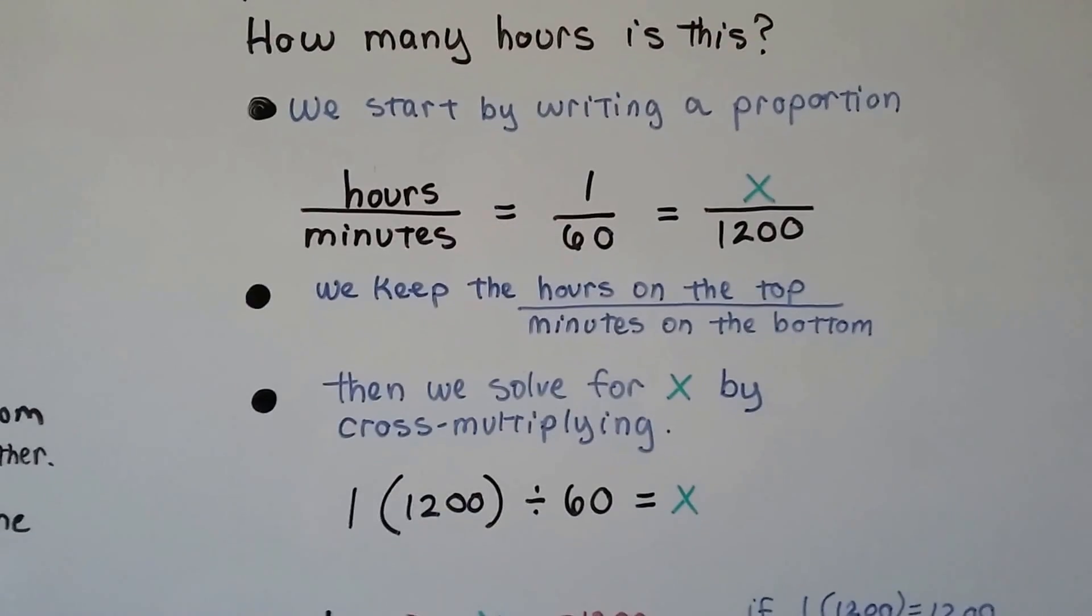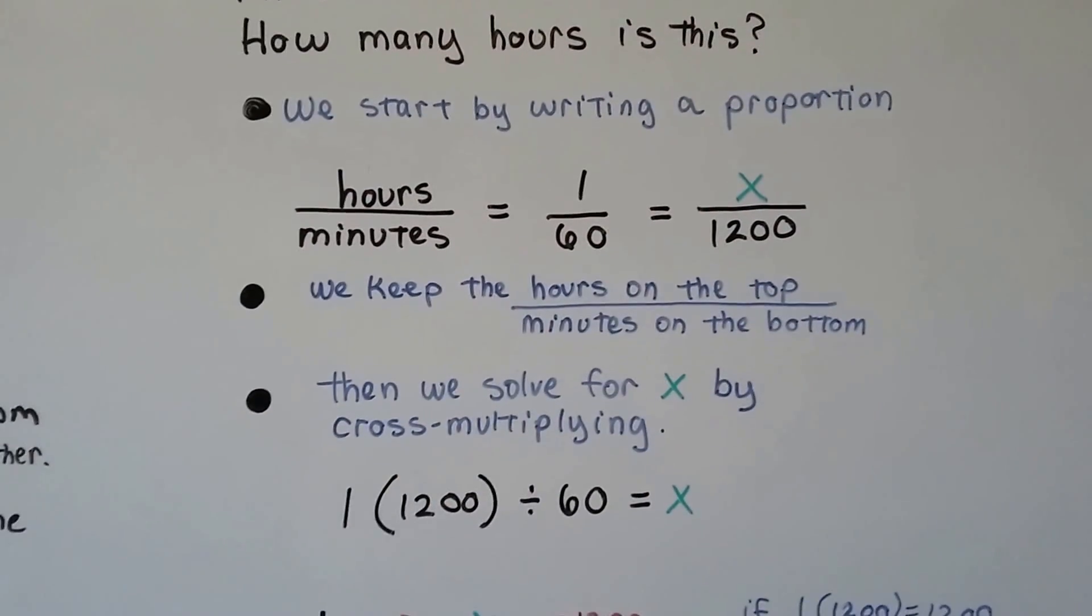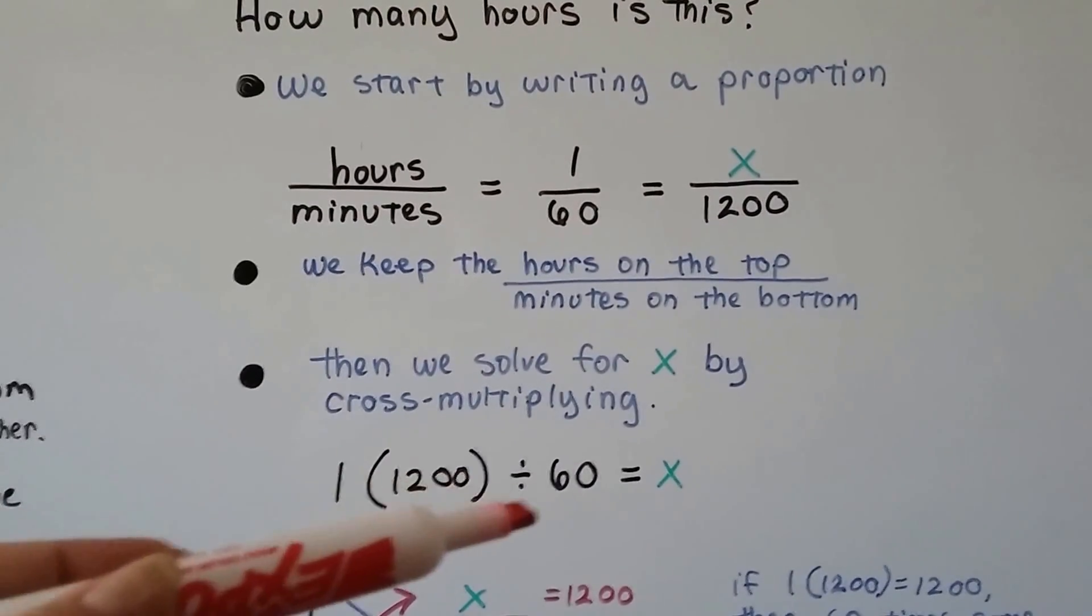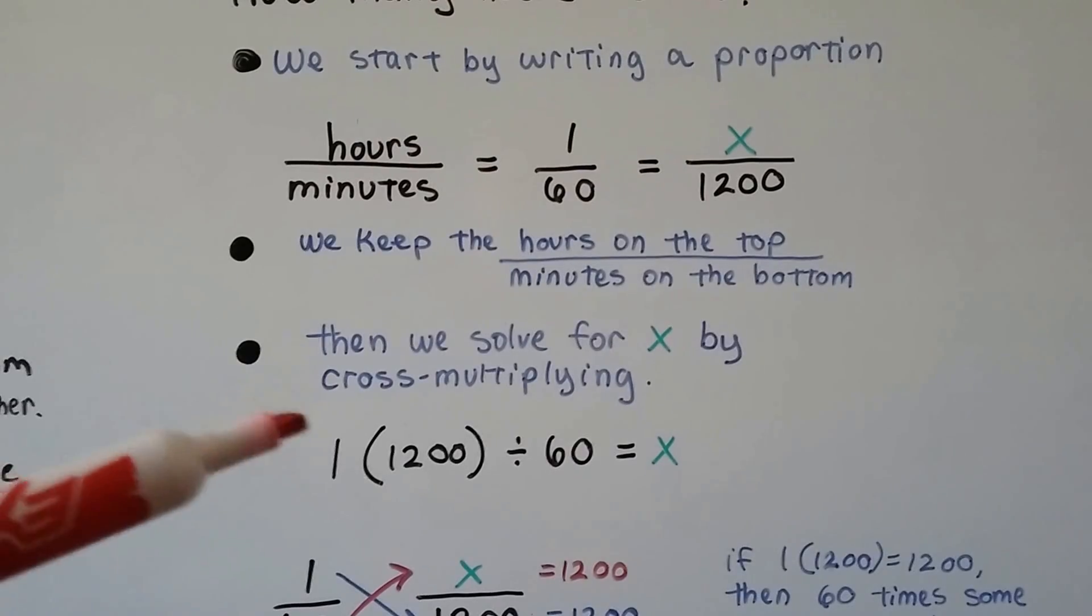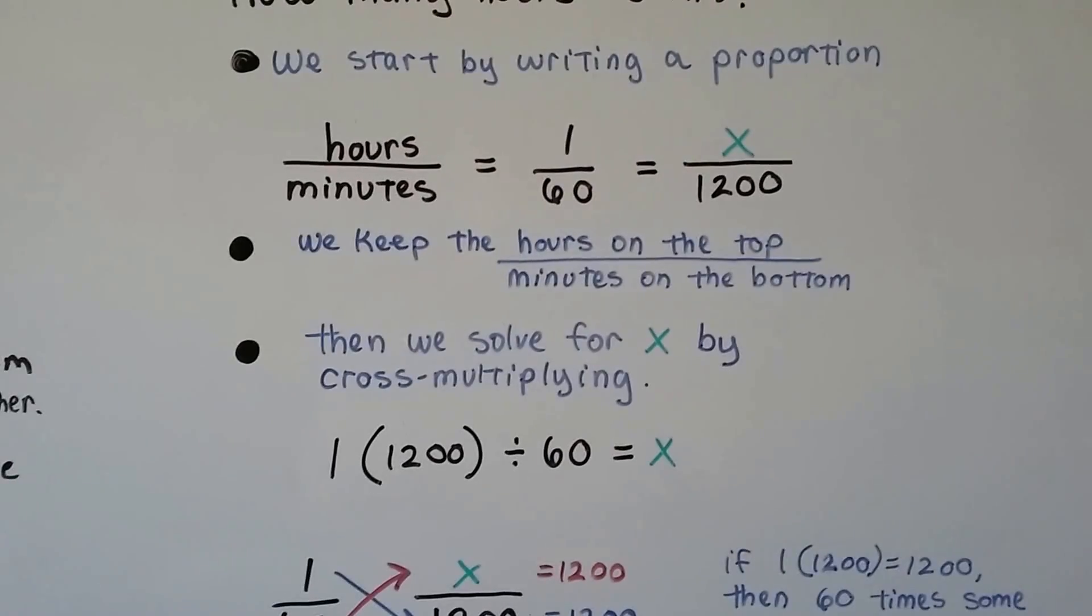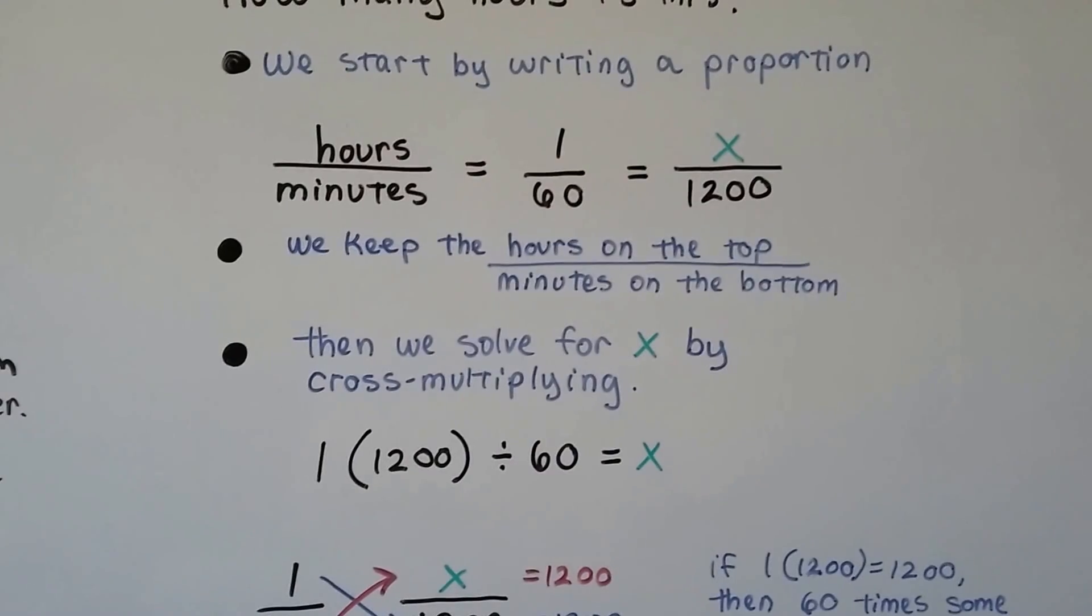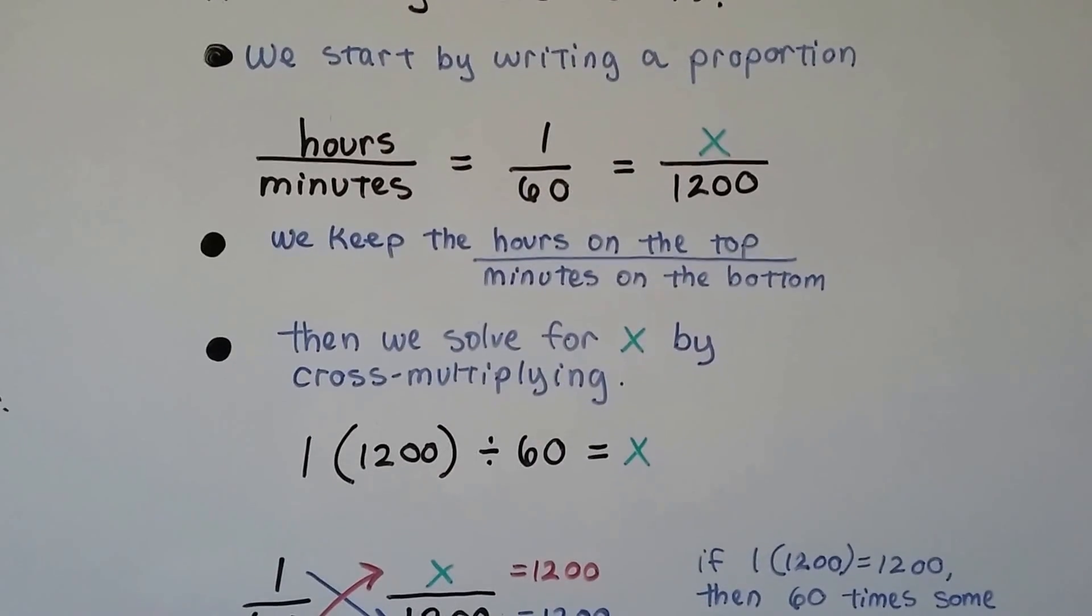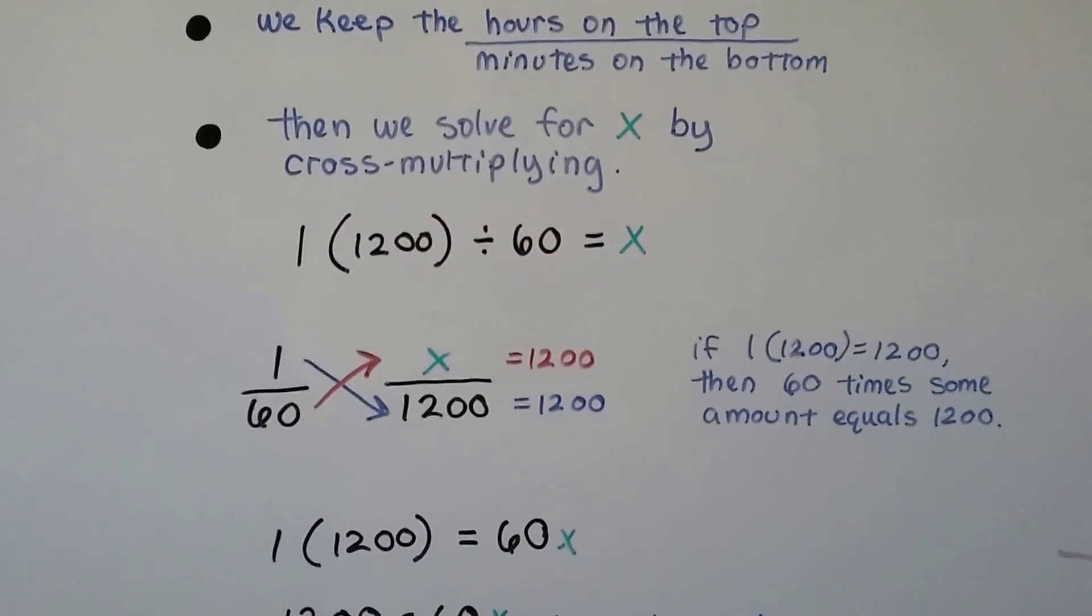We keep the hours on top and the minutes on the bottom. We solve for x by cross-multiplying. It can also be written as an equation as 1 times 1,200 divided by 60 equals x. This is really important to know, because sometimes on the test, it won't ask you the answer. It'll ask you which of these choices would be the correct equation to answer this problem.